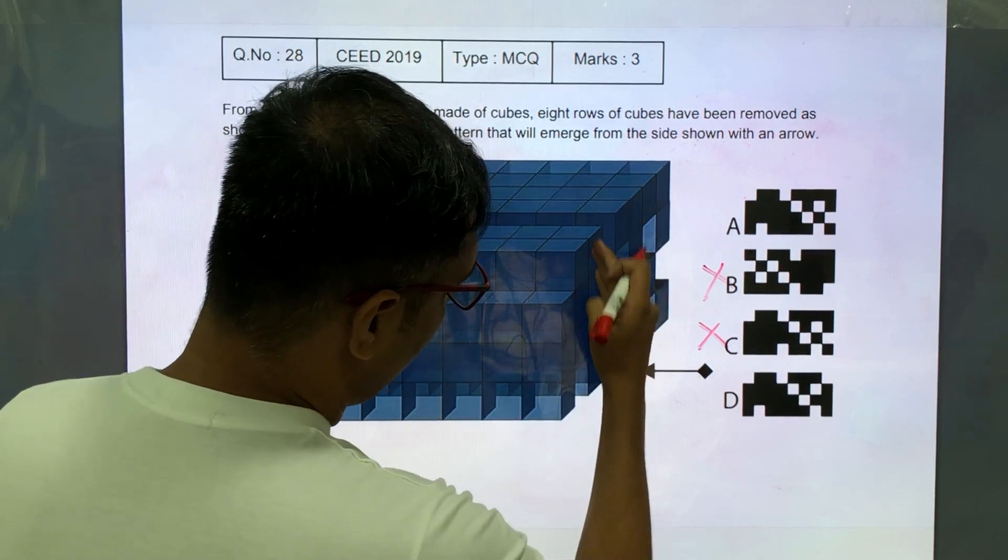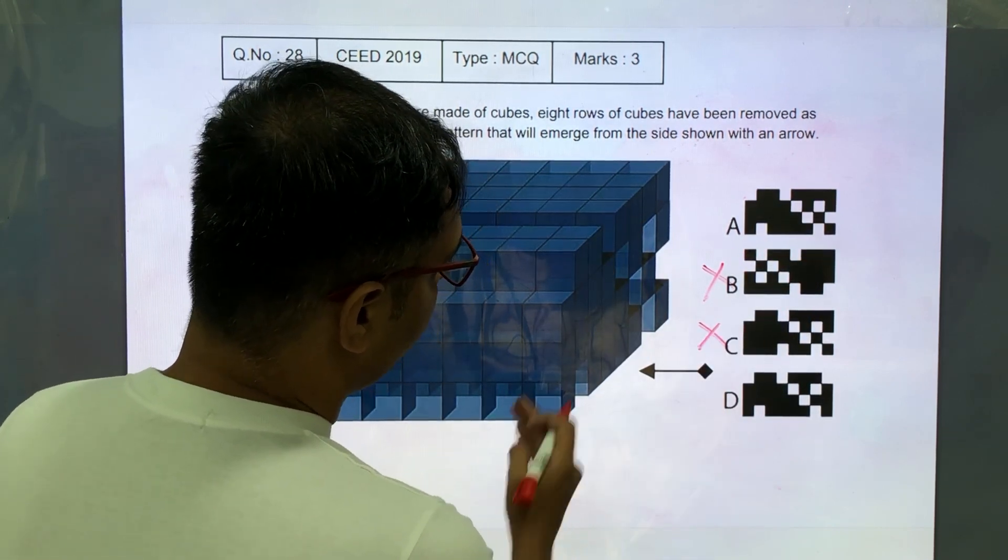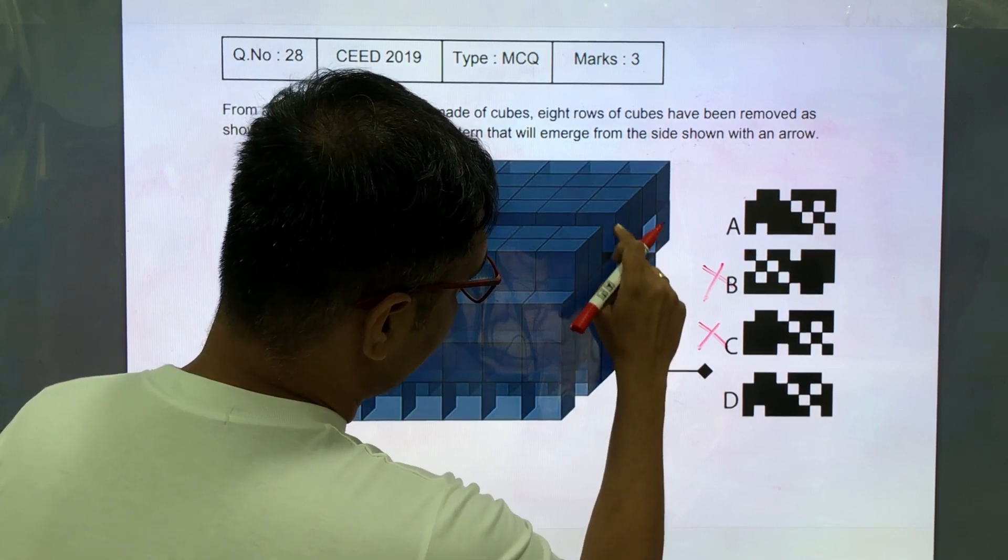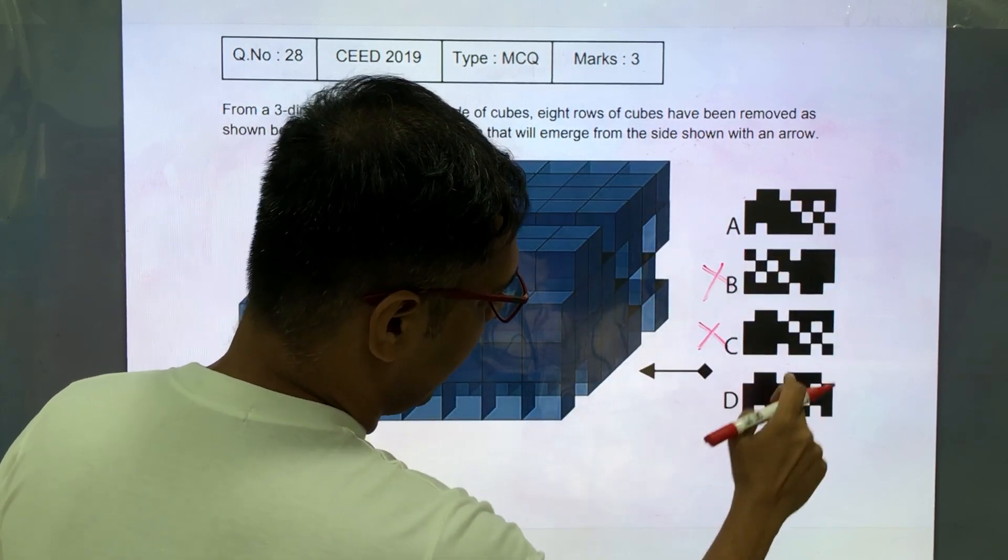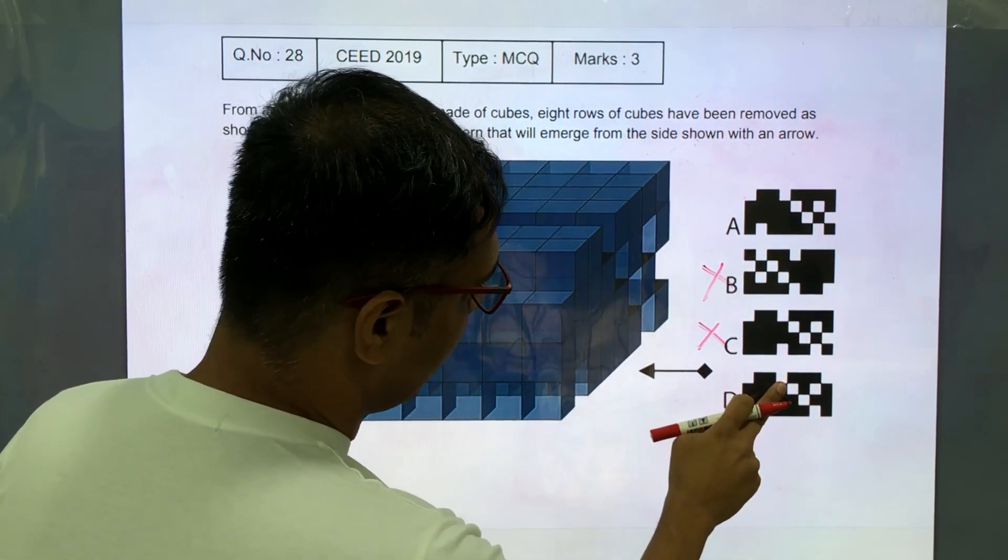The third column is complete which is correct. The fourth column, there is a gap on the top which is seen in A as well as D which is correct.